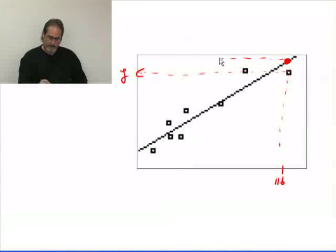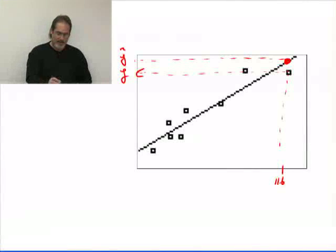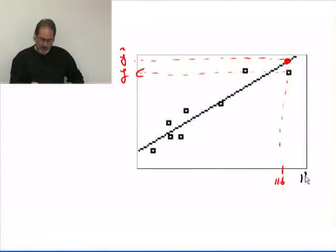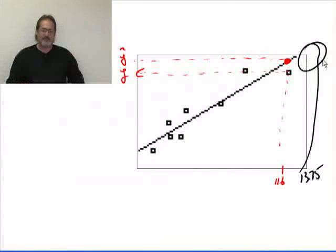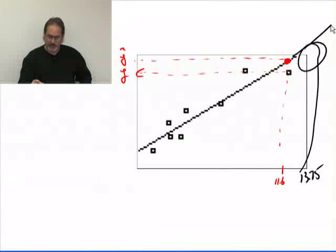Right here will be the y hat, the estimated value for 11.6, but we asked about 13.75, which is actually off the screen—that's why we got that error. This brings up a good point: this line actually goes off into infinity, however, we do not want to use regression beyond the data scope that we have.